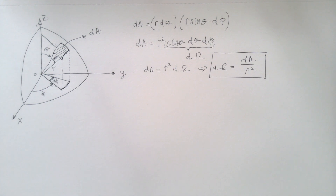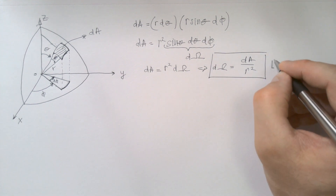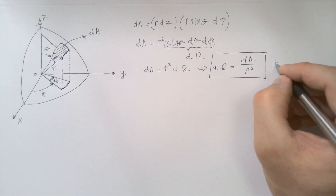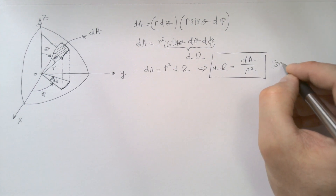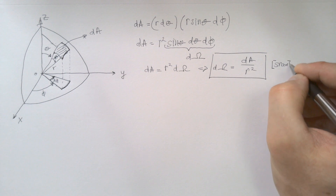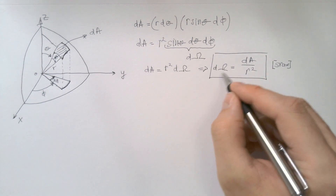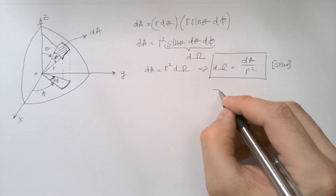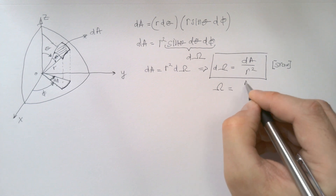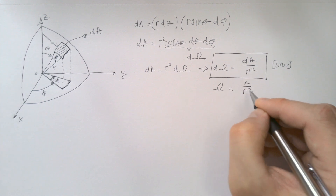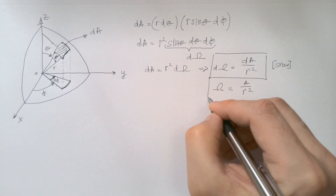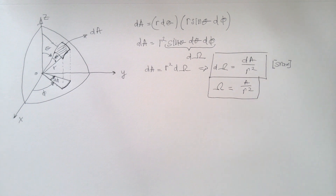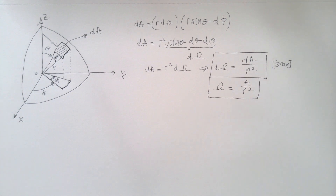What is important is that this quantity over here is what we call the differential increment of the solid angle dω. Which means that dA is equal to r² dω. Or, from here, dω is equal to dA over r². And, as I said, the unit is the steradian. Of course, if you want solid angle not in differential form, then omega is simply A over r², which is what we got in the previous page using the poor man's method.